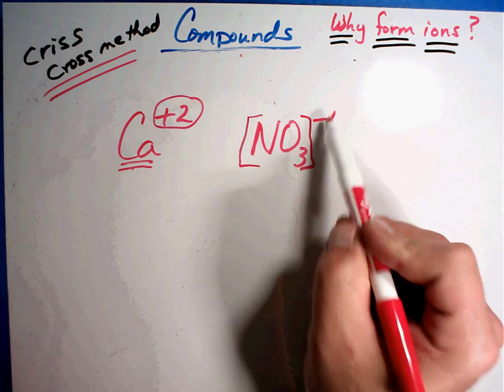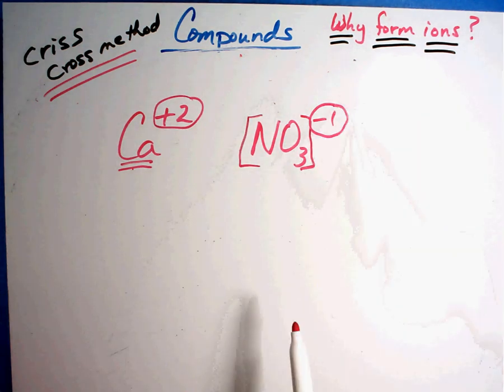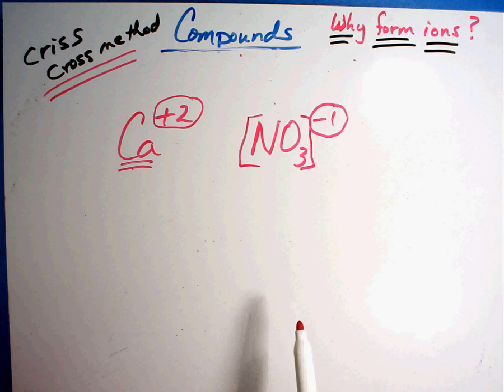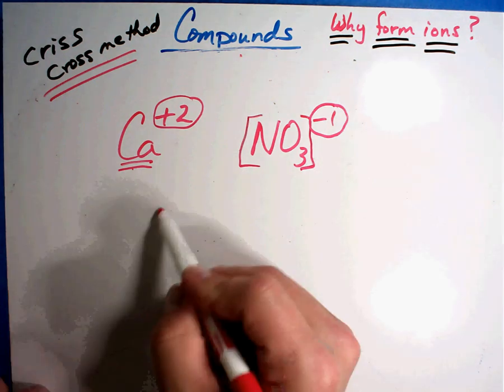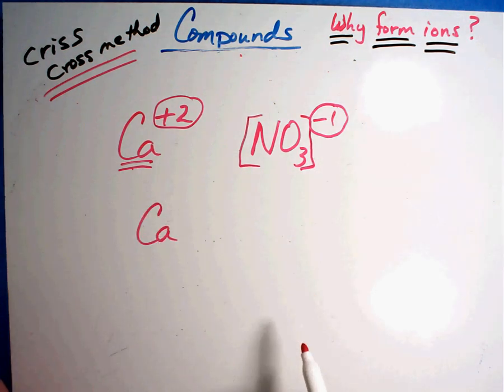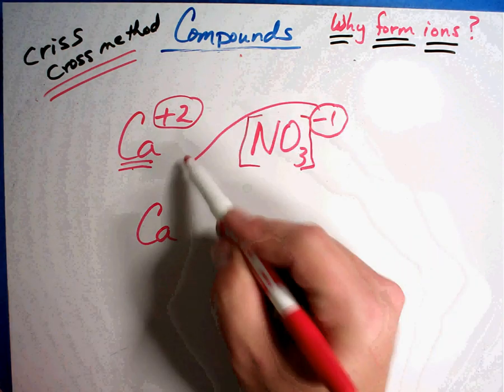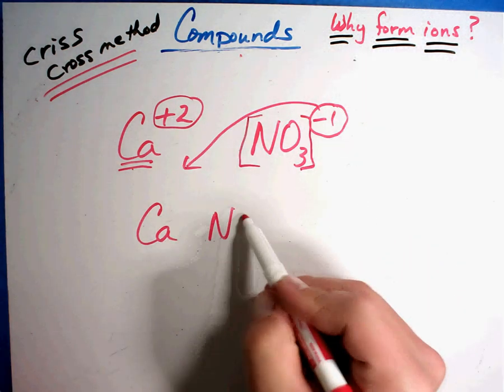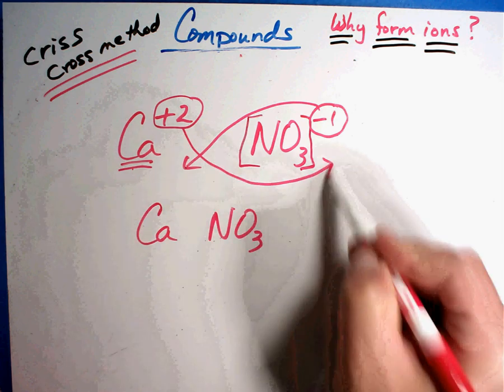All this is, is a group that has a charge rather than just a single. So this is a single that has a charge, this is a group that has a charge. It's called a nitrate in this case. You don't have to memorize it. Most times they'll tell you it's called nitrate. They just say calcium is going to form with nitrate. What's the correct formula?